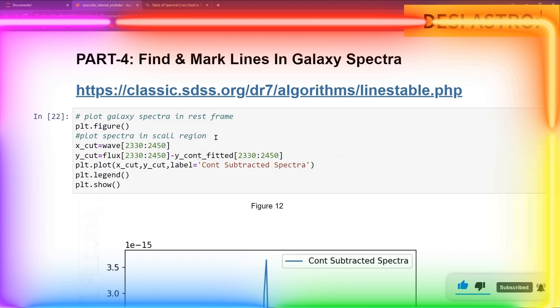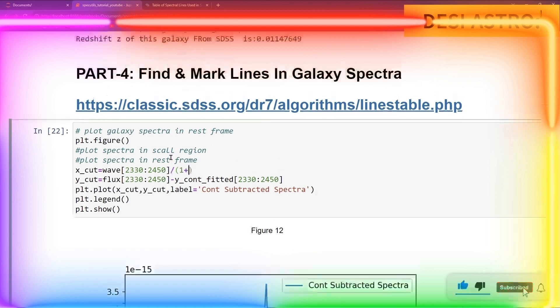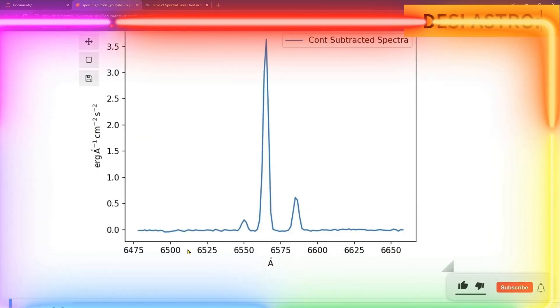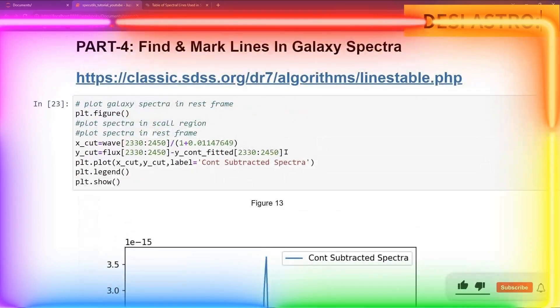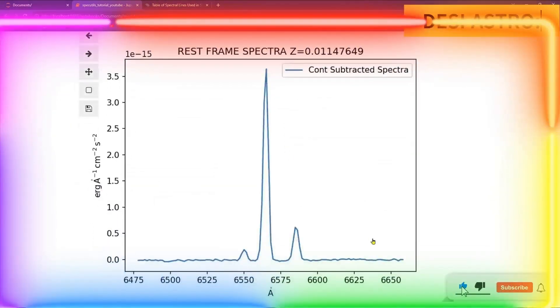For that we have to plot the spectra in rest frame. So for doing that, you will define your wavelength divided by 1 plus your redshift. Your z value is here, so I will take here z value we have obtained. And then our spectra has been brought into our rest frame. So our first job is done.